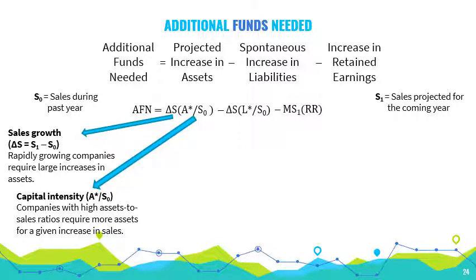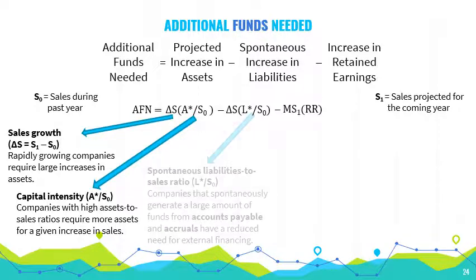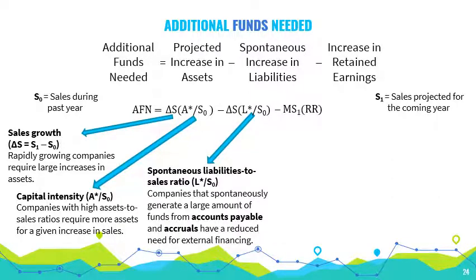Spontaneous liabilities are liabilities that increase spontaneously with sales. They include accounts payable and accruals, but exclude bank loans and bonds. The higher the spontaneous liabilities to sales ratio, the lower will be the need for external financing.